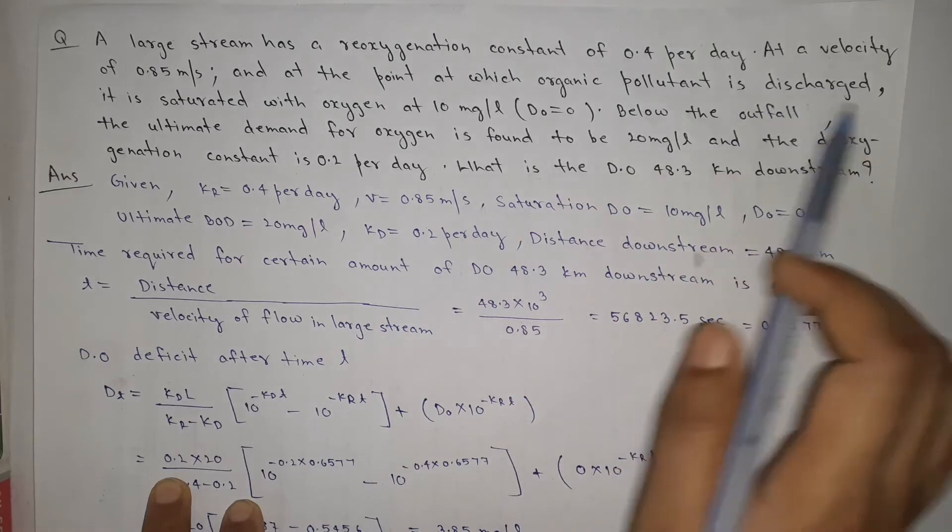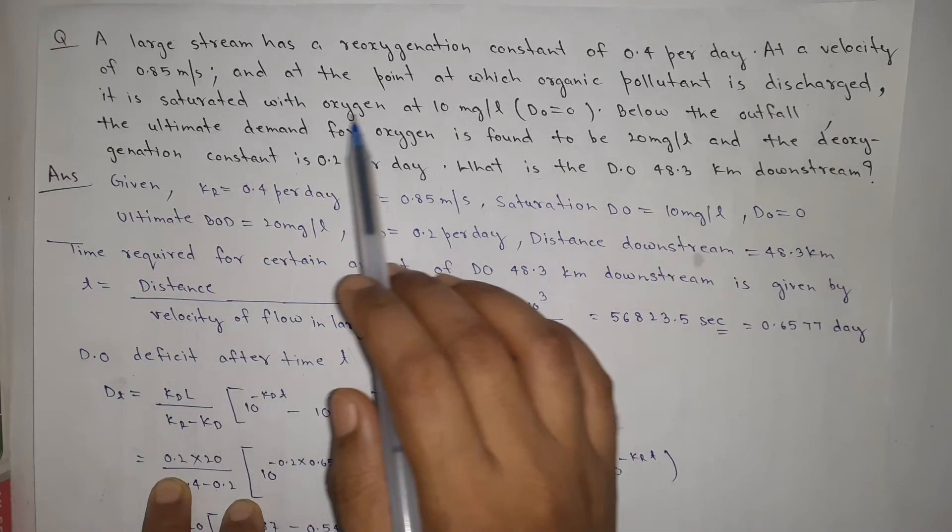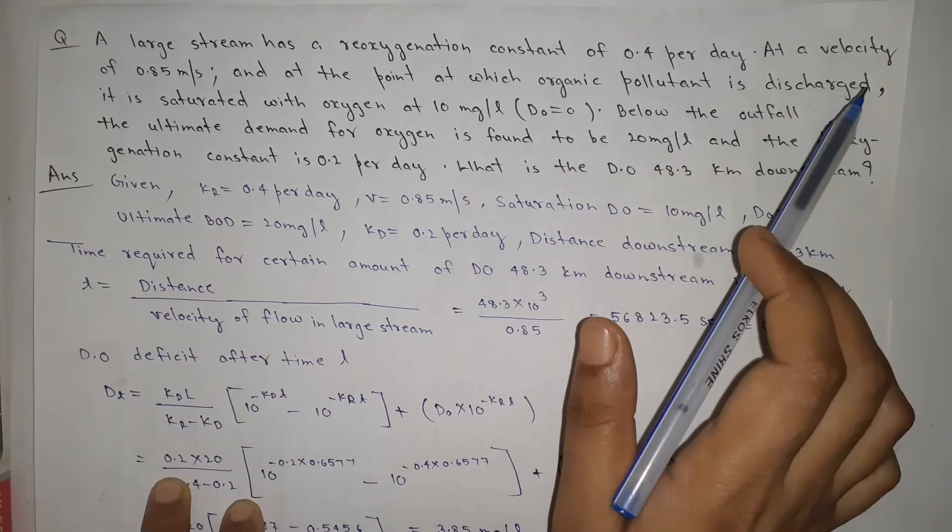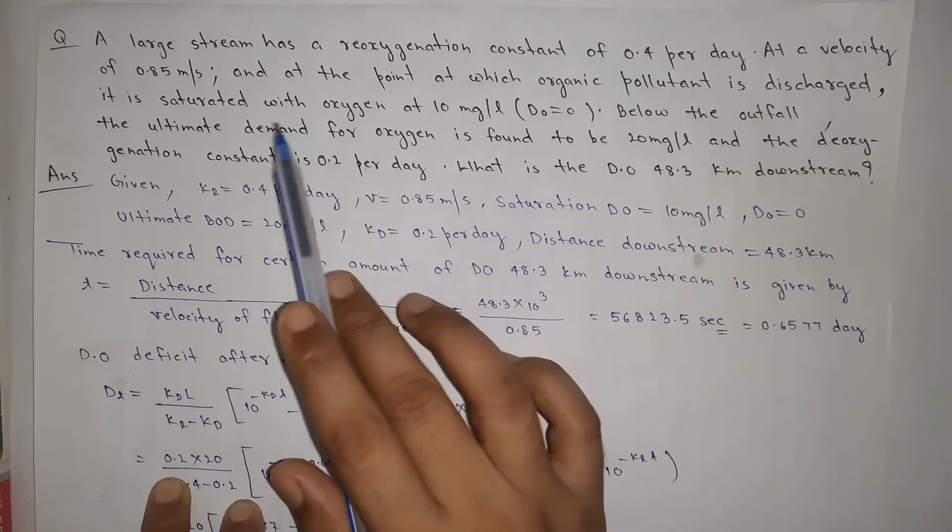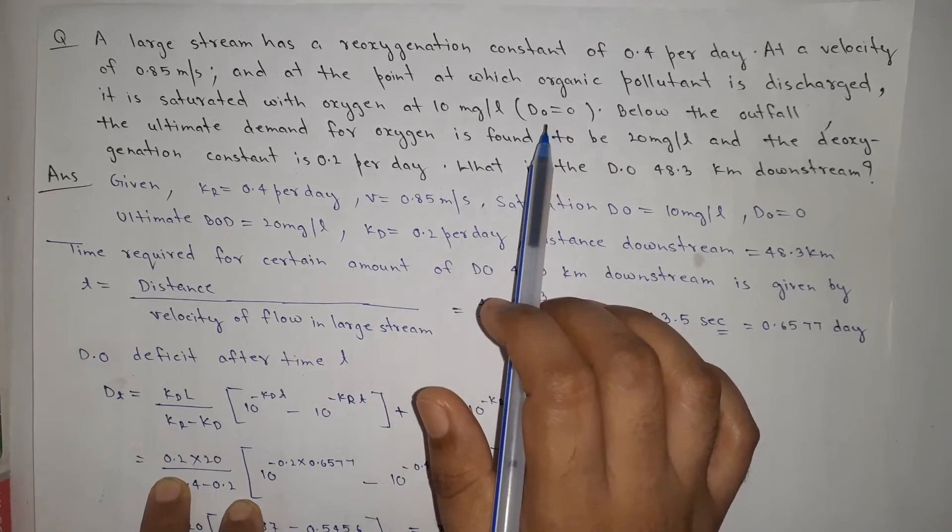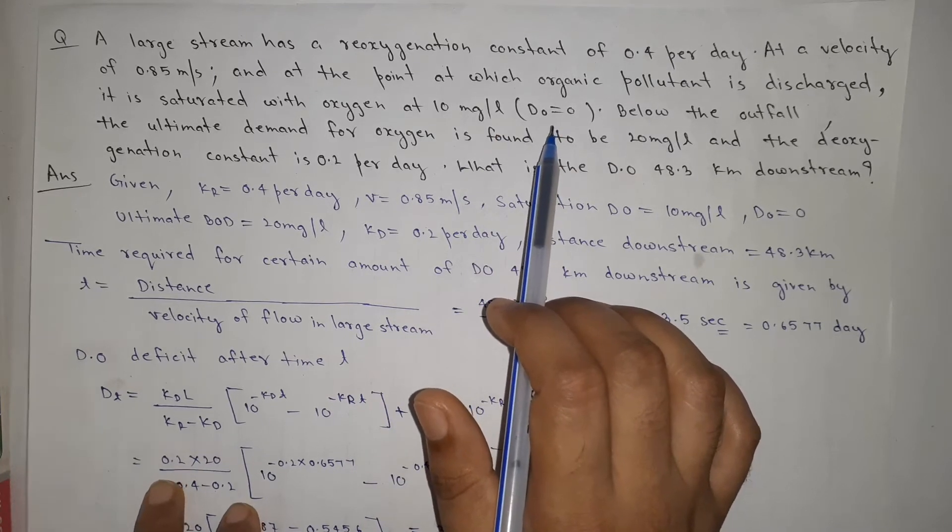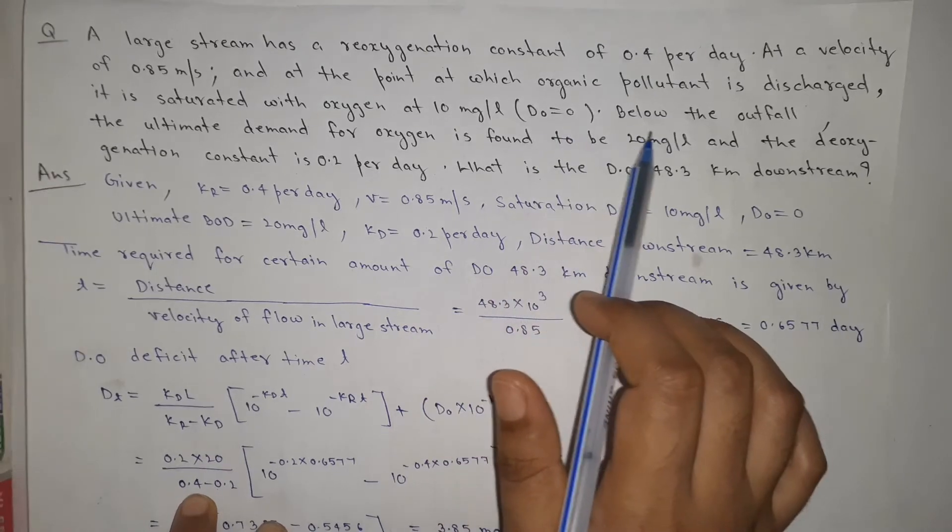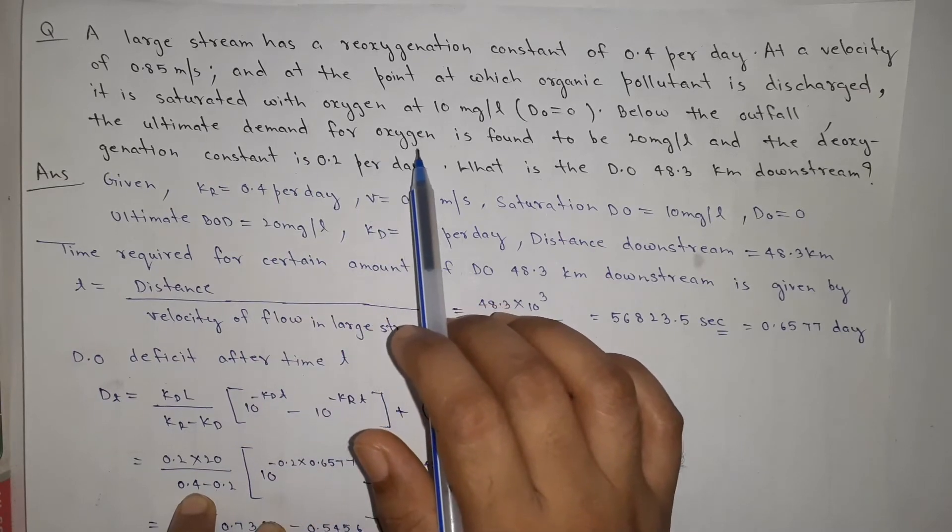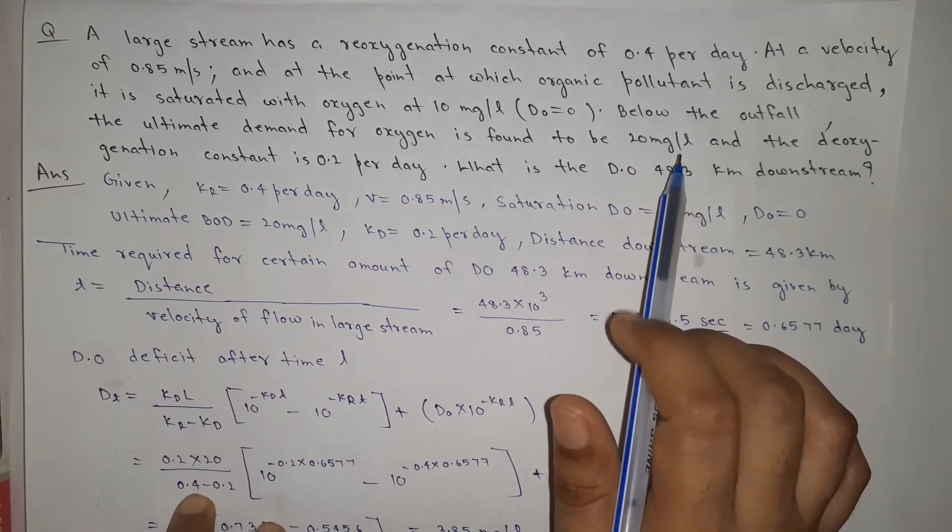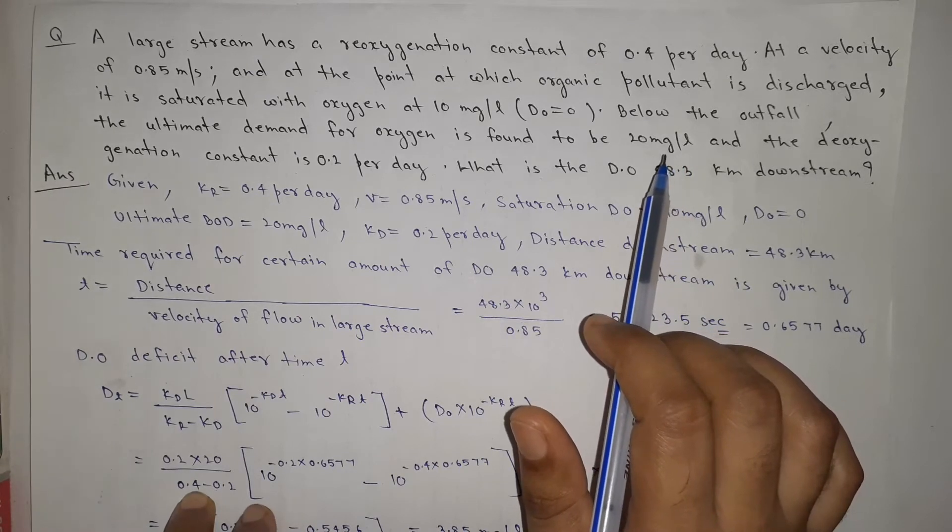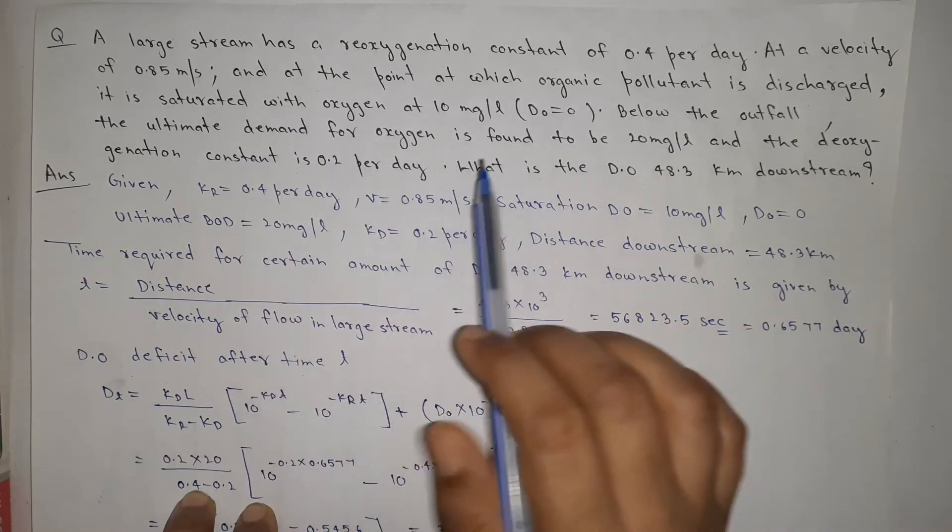At the point at which organic pollutant is discharged, it is saturated with oxygen at 10 mg per liter. The saturated dissolved oxygen is 10 mg per liter and D not means there is no oxygen deficit initially.